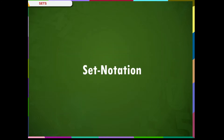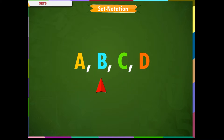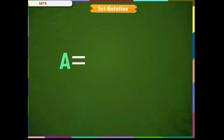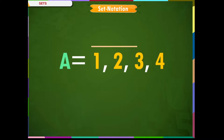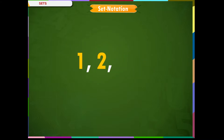Set notation. Sets are always represented in capital letters like A, B, C, D, and so on. For example, A = {1, 2, 3, 4}. The objects of a set are called its elements or members. The elements are denoted by small letters like x, y, z, etc. The elements are enclosed by curly brackets. For example, 1, 2, 3, 4 are elements of set A.